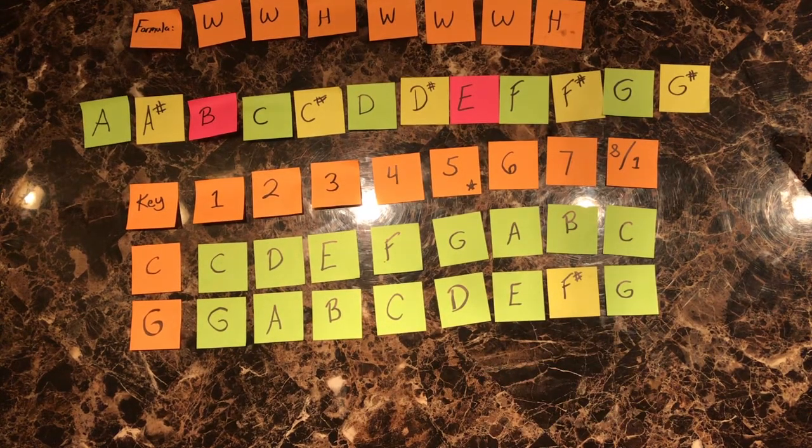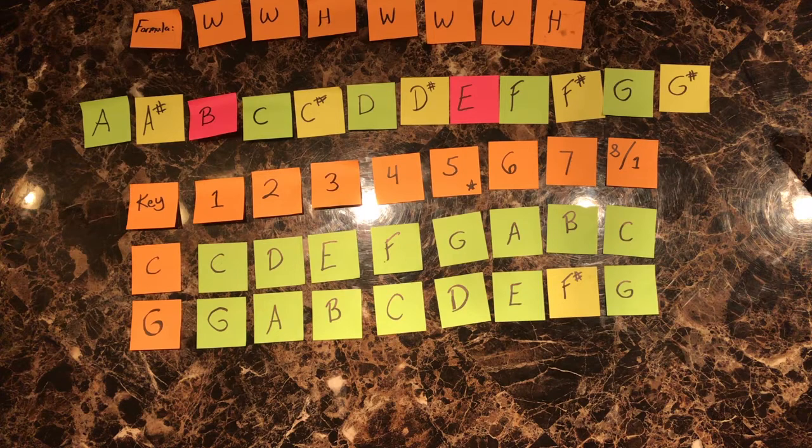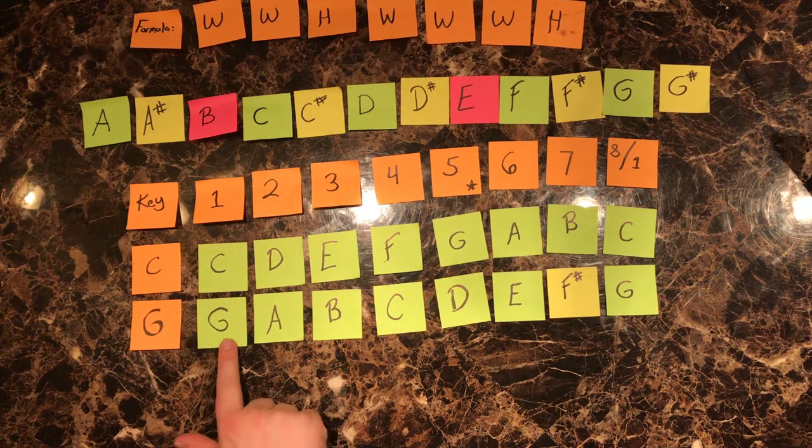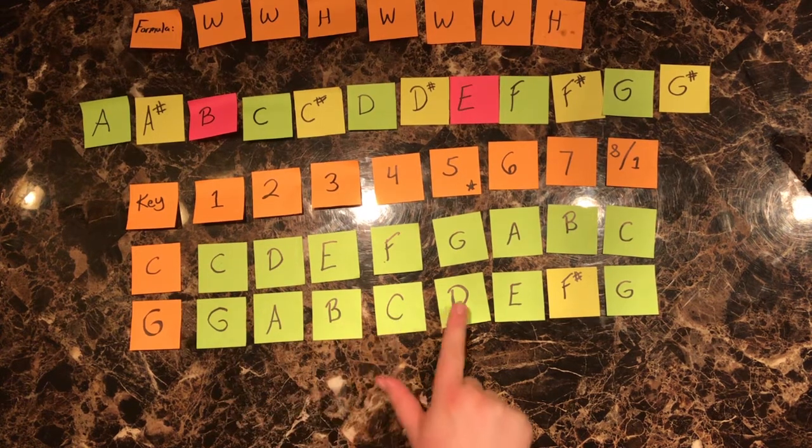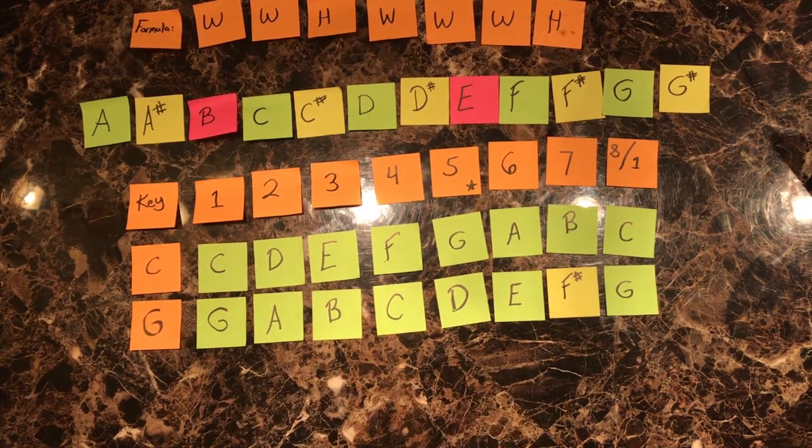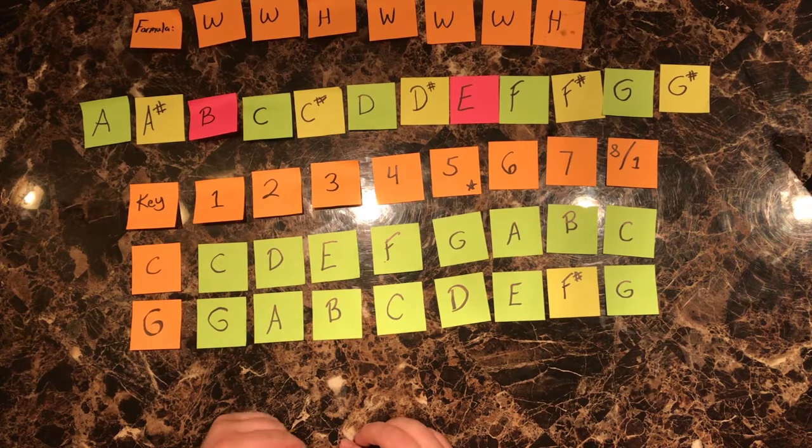The rest of the keys follow this pattern, of the fifth being the new key, and the seventh gaining the new sharp. Just like we did before, our new key is going to be the fifth of the previous key. This happens to be D. Because F is sharp in our previous key, it carries forward.